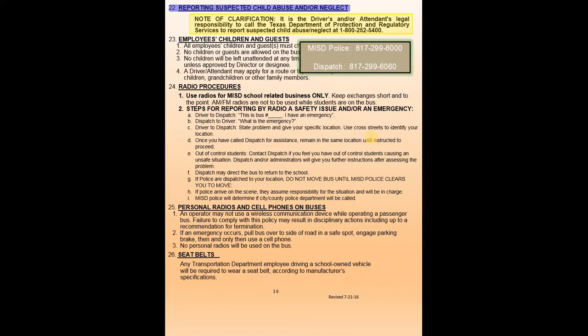I want to make sure you have these phone numbers in your phone. If you suspect child abuse and/or neglect, there is a 1-800 number. More importantly, I want to emphasize these phone numbers: MISD police for accidents — 817-299-6000 — and dispatch if you have any questions while out on the road — 817-299-6060. Those are a couple of numbers you just need to have handy. Most of the time when you're after hours, you're going to be contacting MISD police. Anytime your bus breaks down, there's a minor accident, or any kind of issue whatsoever, that's who you call, and they will go down their chain of command to figure out who they need to contact and get you the service you need.